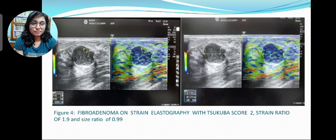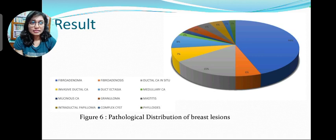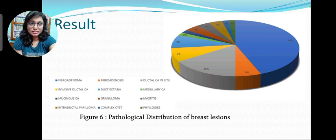This is a case of fibroadenoma on strain elastography with a Tsukuba score of 2, strain ratio of 1.9, and size ratio of 0.99. This is a case of DCIS with BI-RADS score 4 and Tsukuba score 5, strain ratio of 1.9. Results: this shows the pathological distribution of breast lesions, in which fibroadenoma is the most common at 44%, and among malignant lesions, ductal carcinoma in situ is the most common at 15%.